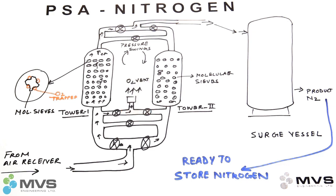Product nitrogen from both the towers is collected in a nitrogen surge vessel. The surge vessel is responsible for giving nitrogen at a constant flow and pressure to the client process.